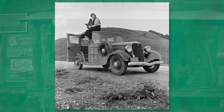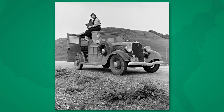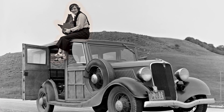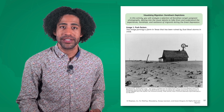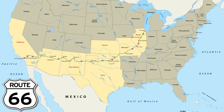Pay close attention to the historical photos in this section of the video — they're all by Lange. In fact, there she is sitting on top of that car. In our PDF, we'll take a closer look at how her images give us insight into the lives of migrants in the United States. Many Okies and Arkies journeyed along Route 66, the famous highway that stretched from Chicago to California, which helped facilitate their movement by providing a direct route to California.